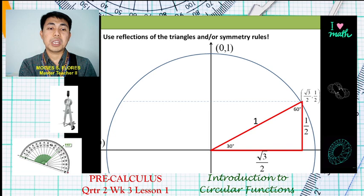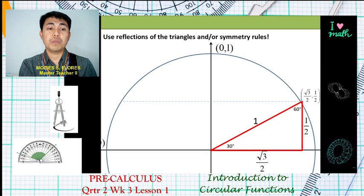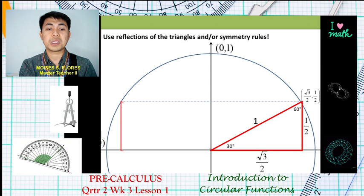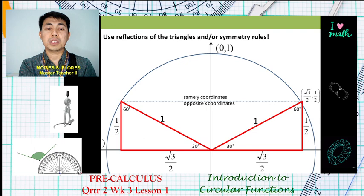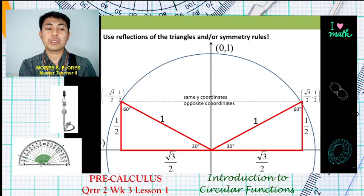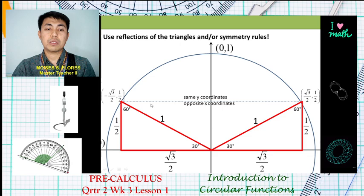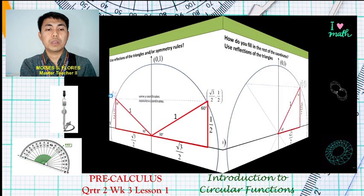For the other quadrants, we use reflections of the triangles — symmetric rules apply. The coordinates have the same values with respect to y, but the opposite sign with respect to x. So in quadrant 2, (√3/2, 1/2) becomes (-√3/2, 1/2).